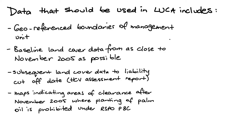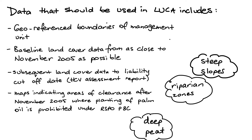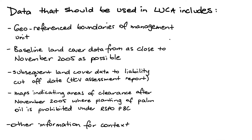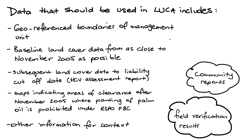Maps indicating areas of clearance after November 2005 where the planting of palm oil is prohibited under RSPO PNC — for example, riparian areas, steep slopes, or deep peat areas — for potential remediation, and other information that can produce context, such as field verification results and community reports related to historic land use.